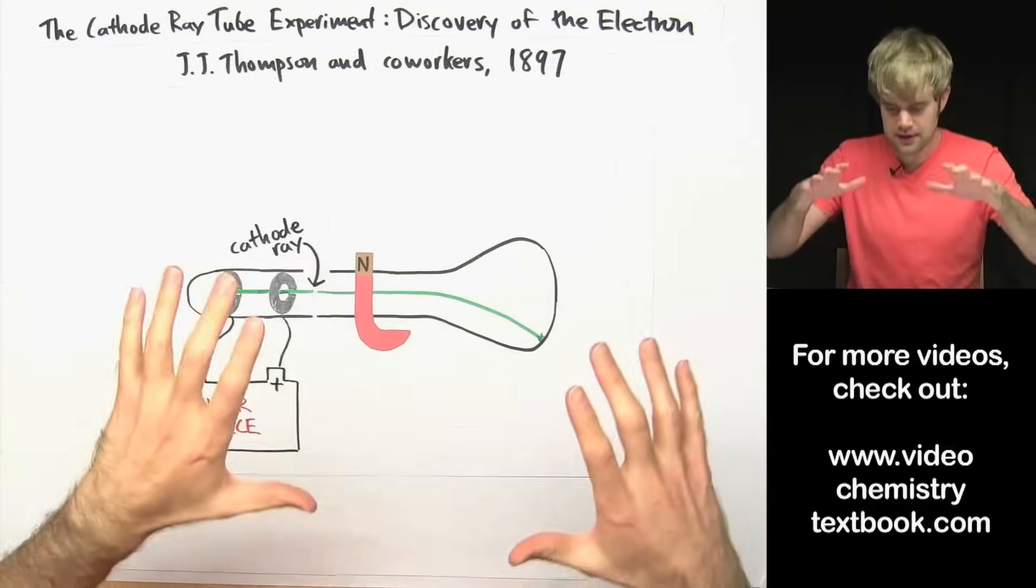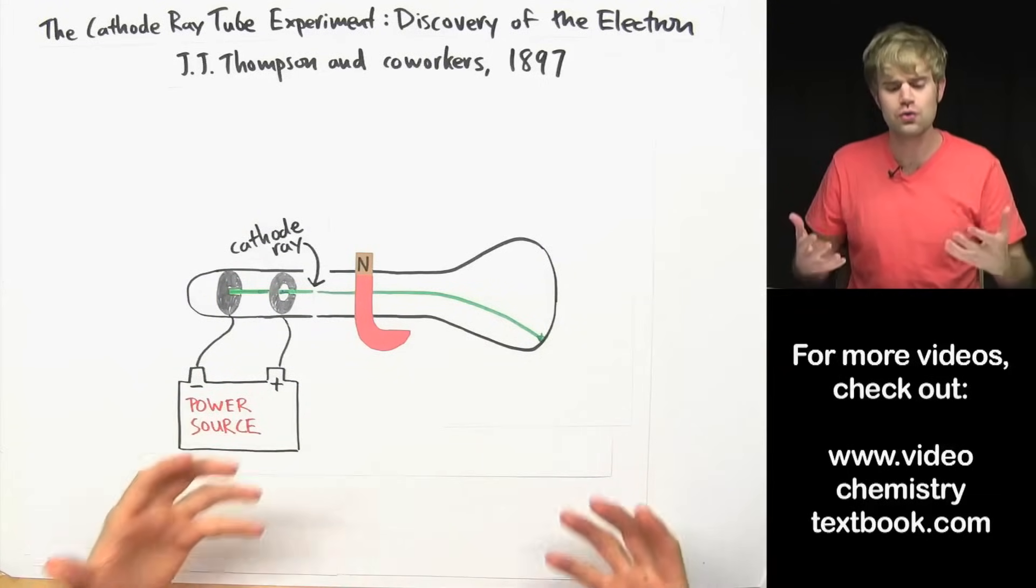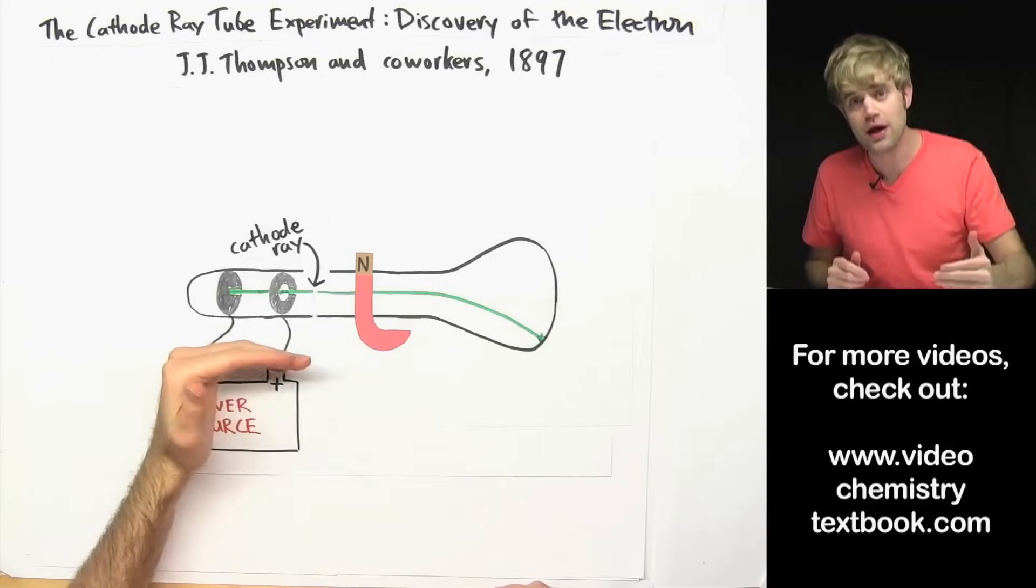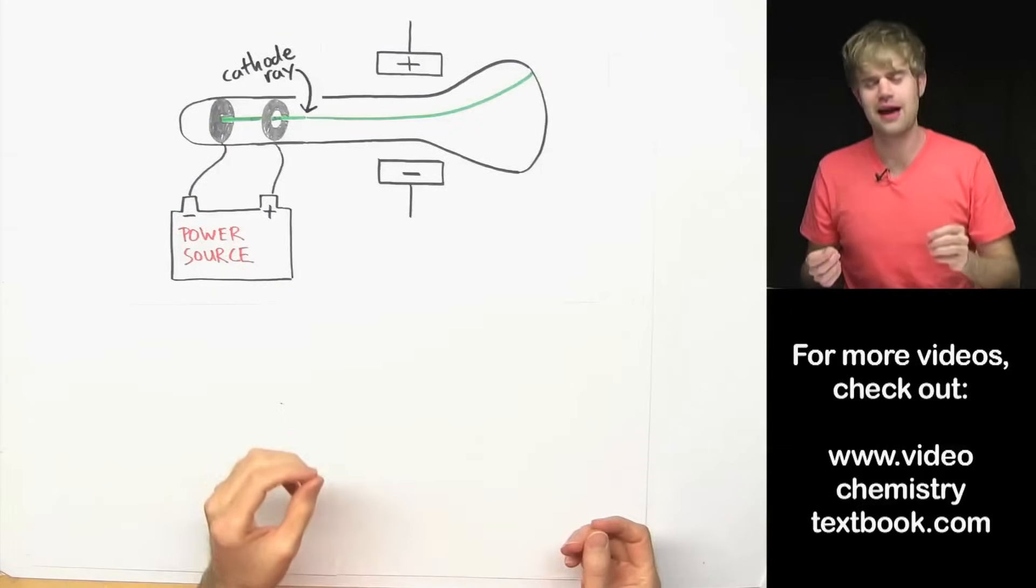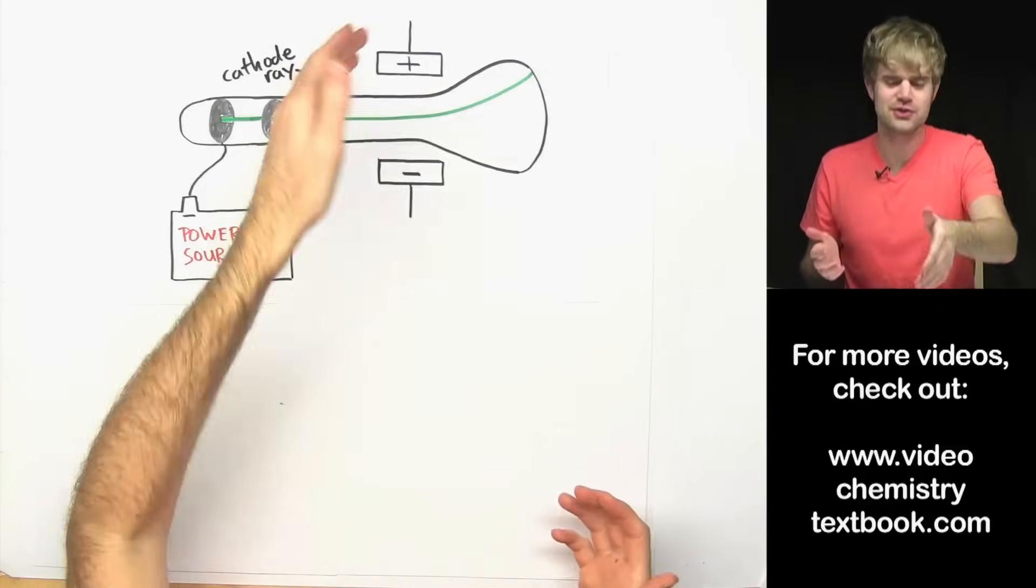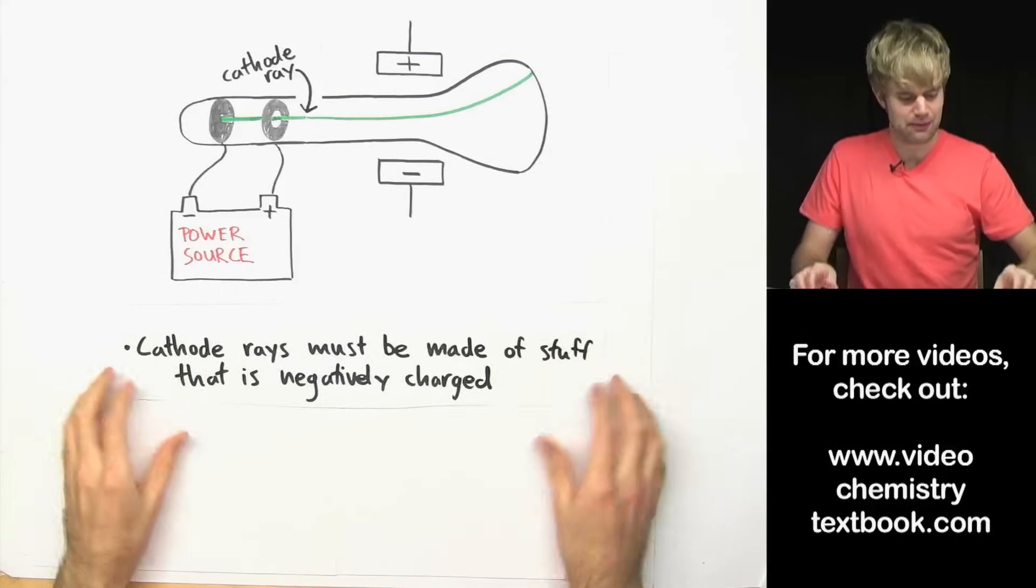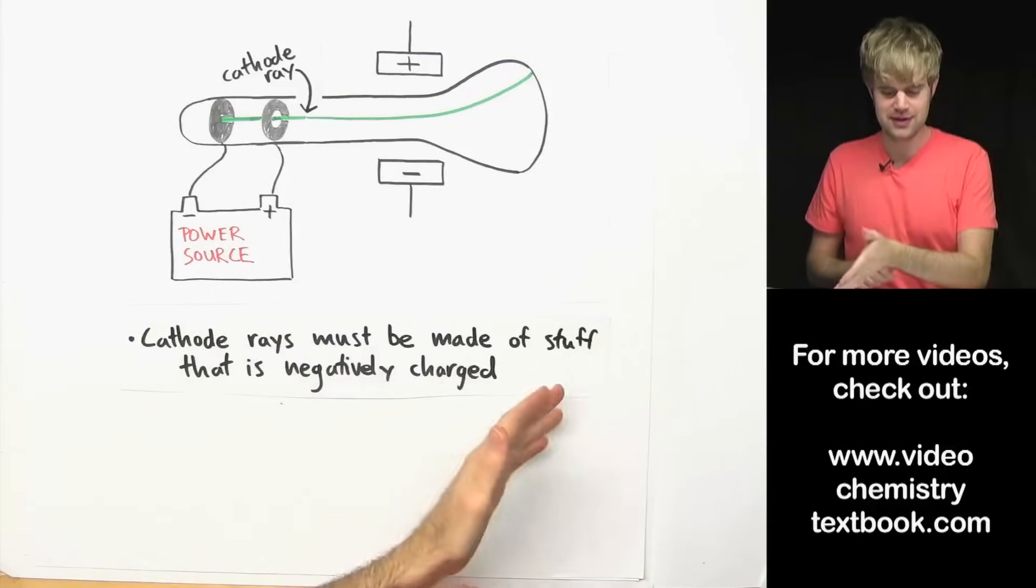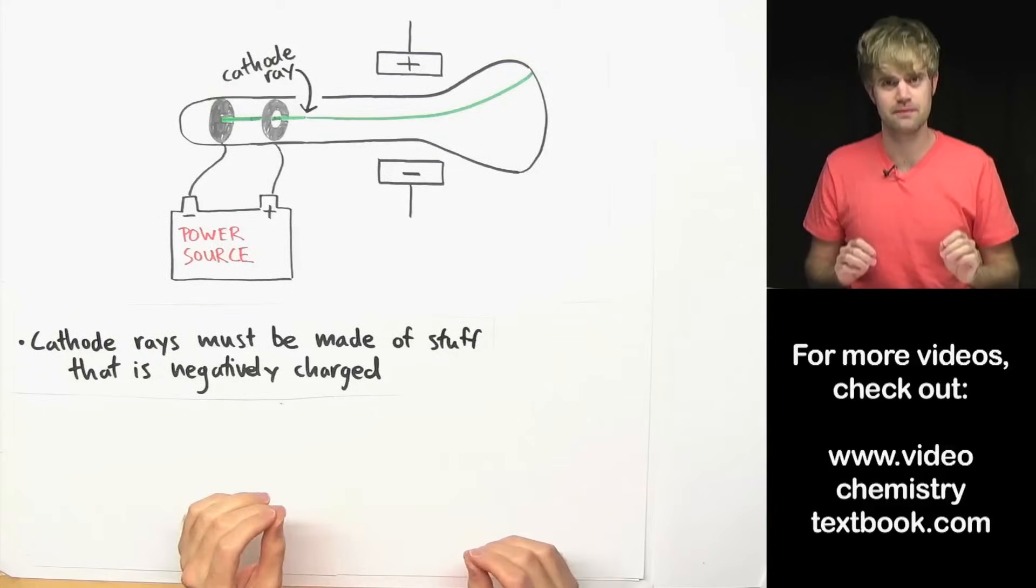So he takes the data that he gets from these experiments and he's able to draw a few important conclusions about cathode rays and what makes up atoms. So based on the outcomes of the experiments with the charged plates and the magnet, Thompson is able to conclude that cathode rays must be made of stuff that is negatively charged.